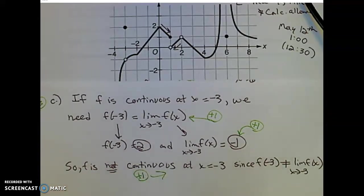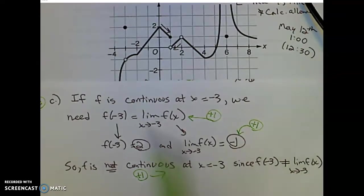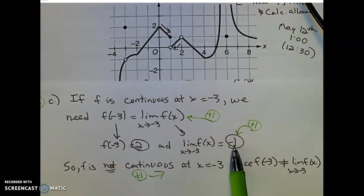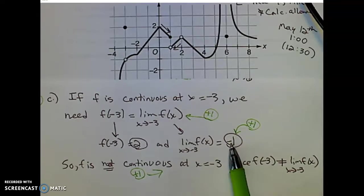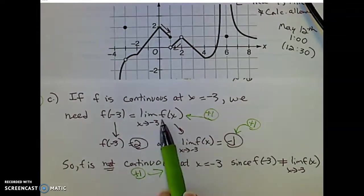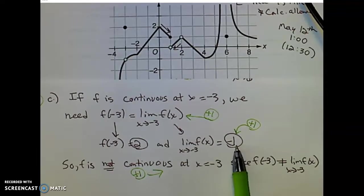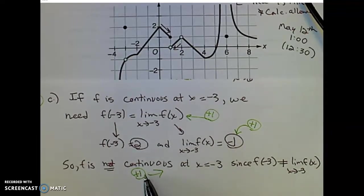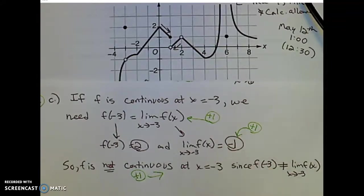What if you got the limit value wrong — for example, you wrote positive 1 instead of negative 1 as a sign error? You might lose the point for that answer, but you would still get the point for correct limit notation and the point for your justification. So it's okay to make that mistake — you might just lose that one point and get the other two.